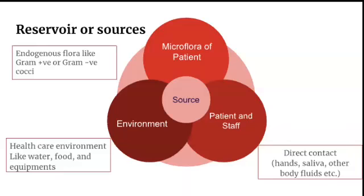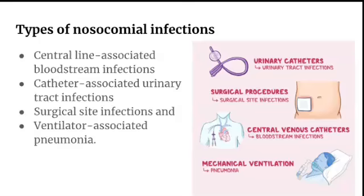The three main reservoirs or sources of HAI are: the endogenous microflora of the patient, the patient and staff, and the healthcare environment. The types of nosocomial infections have been classified by the CDC as: central line-associated bloodstream infection, catheter-associated urinary tract infection, surgical site infections, and ventilator-associated pneumonia.